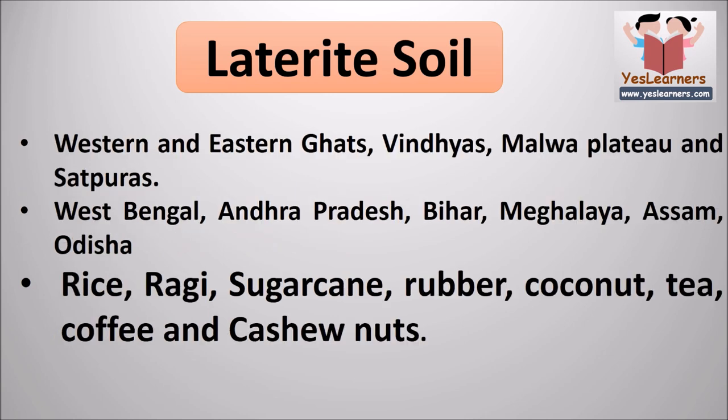Laterite soil is found in several parts of the country, mainly the Western and Eastern Ghats, the Vindhyas, Malwa Plateau and Satpuras. The states where this type of soil is found include West Bengal, Andhra Pradesh, Bihar, Meghalaya, Assam and Odisha, to name a few.